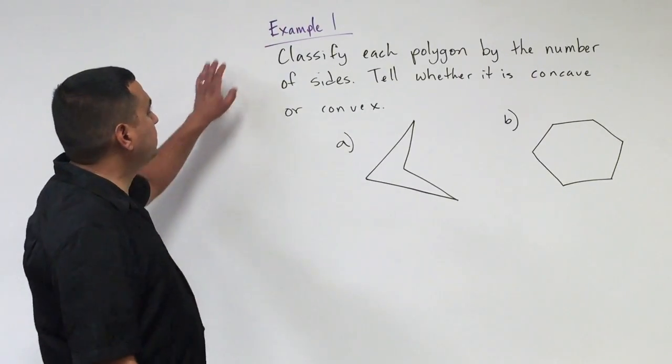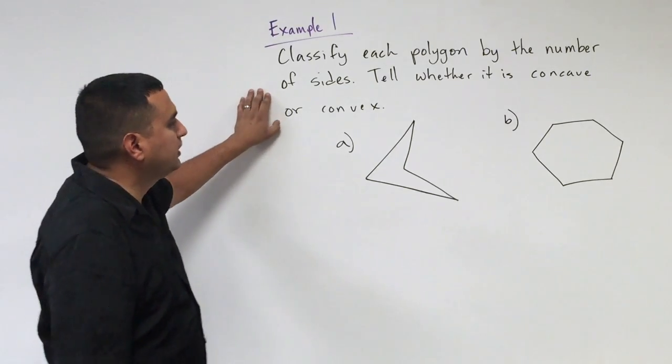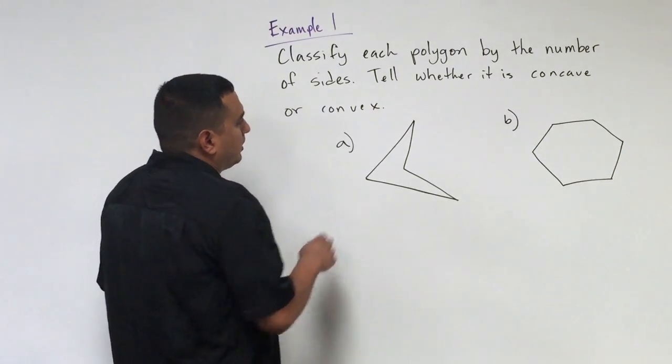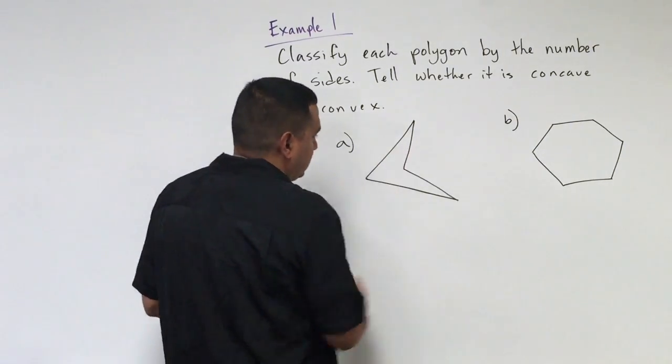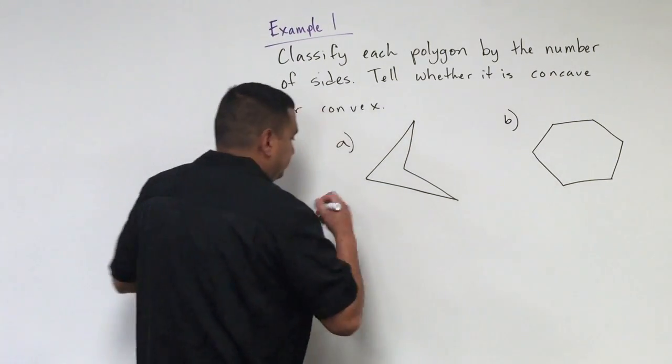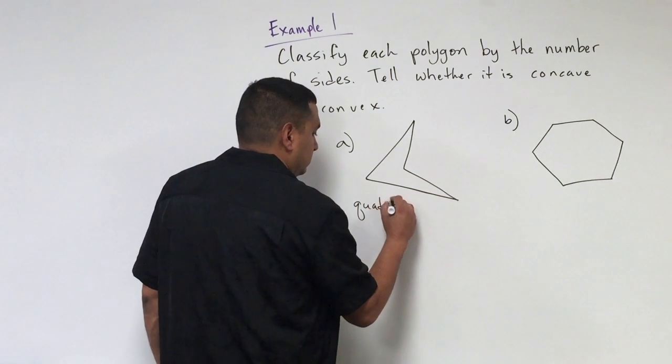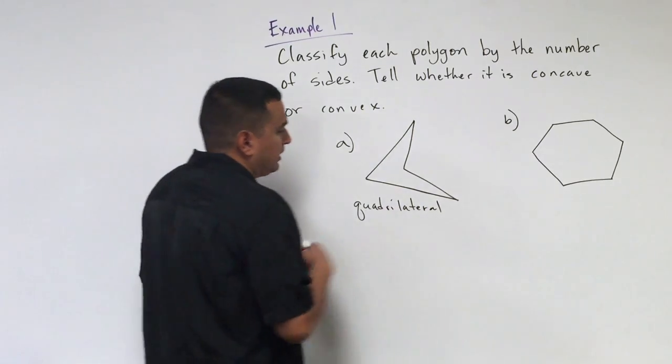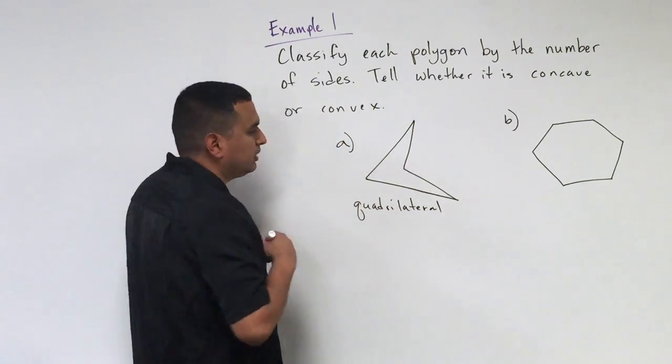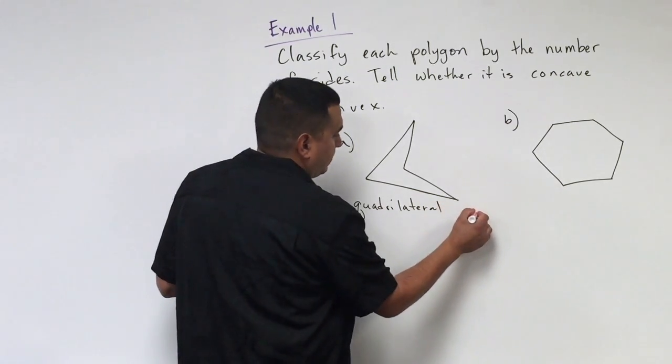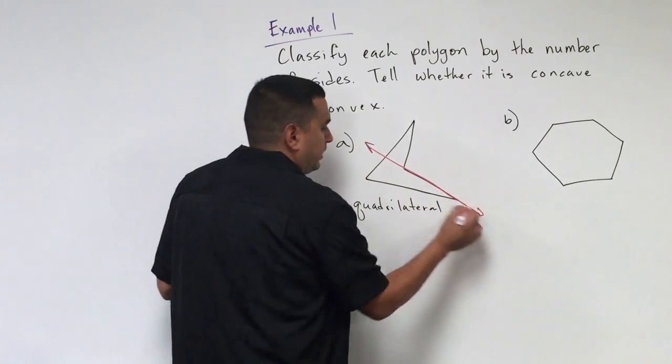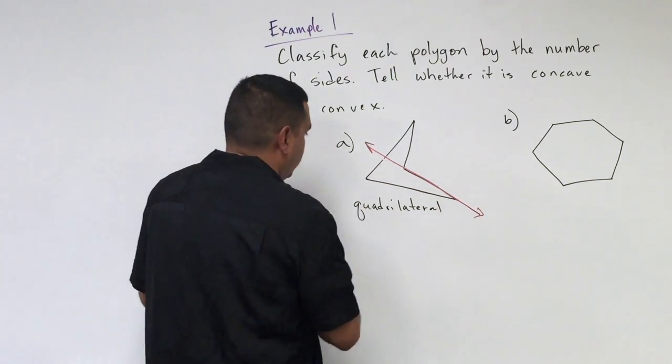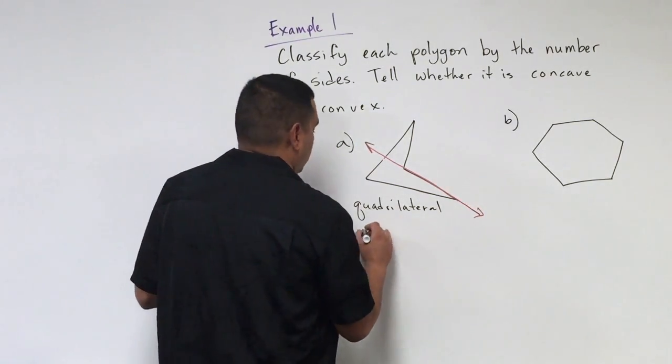This next example, or our first example says to classify its polygon by the number of sides. Then we want to tell whether it's concave or convex. So on this one, you just count the number of sides. So I've got four sides here, so that means it's going to be a quadrilateral. And then remember, if I can extend any of these sides, and they cross or they cut through the polygon, that means it's concave. So I can take this one, and if I extend it, it's going to cut across and actually go through the inside of the polygon. So that means this first one is a concave quadrilateral.